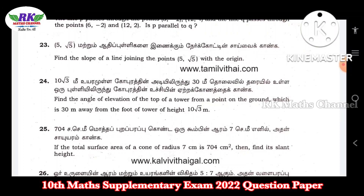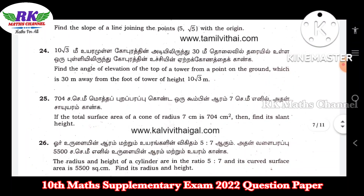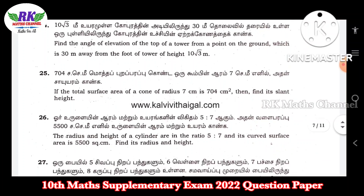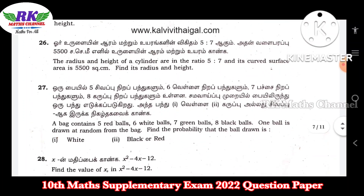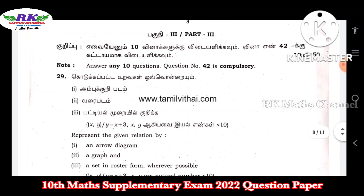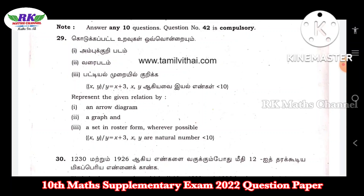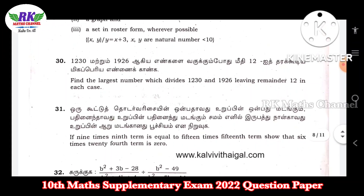Next, question number 24 — this is not in the quarter, so you can see this from the public exam. Question number 29: function — arrow diagram, graph, set in roster form. Question number 30 is from the second chapter.